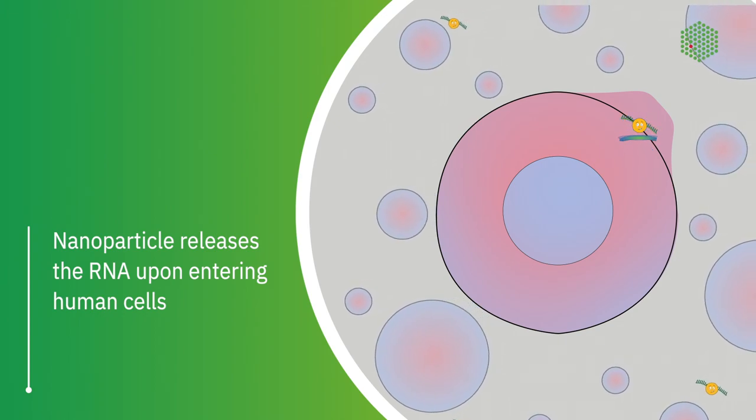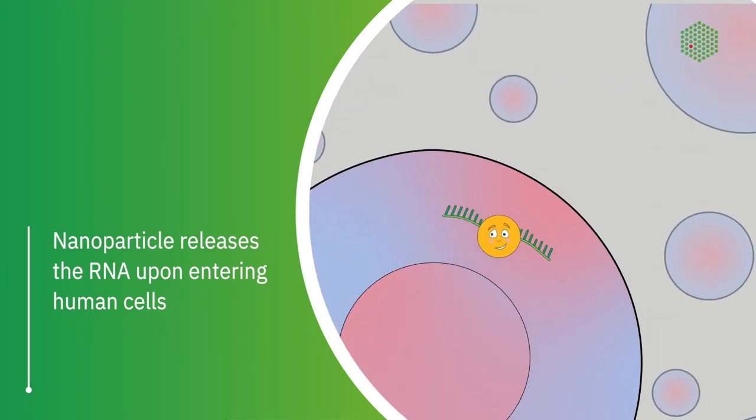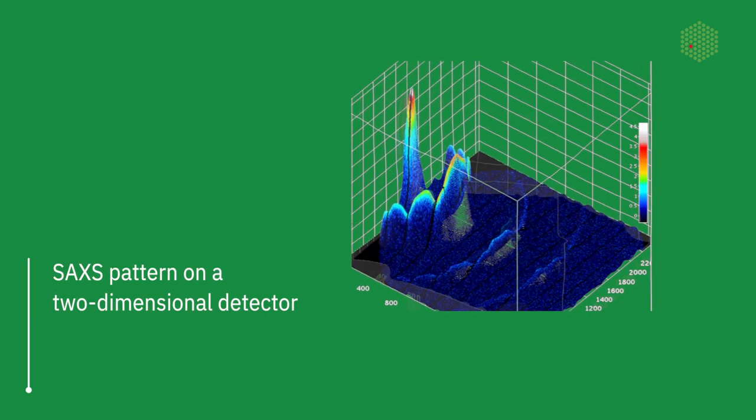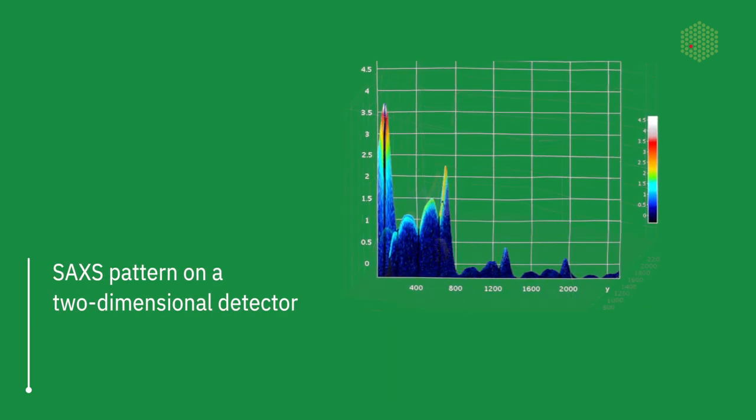The nanoparticle gets flipped to release the RNA when it enters the cell. The trick relies on the change in acidity level. Here, again, SAXS was indispensable to confirm if this switch actually works.